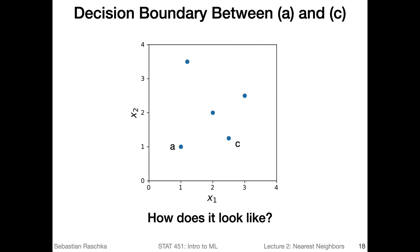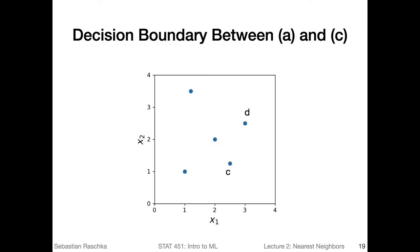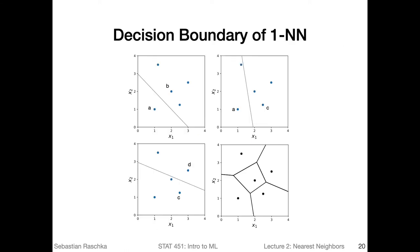We are going to repeat this exercise, now focusing on A and C. The decision boundary for A and C would be a line perpendicular to A and C such that every point on the line is equidistant from A and C. Similarly, we construct the decision boundary for C and D, and so forth. If we assemble all these decision boundaries for all pairs of points in the dataset, we get the decision boundary of a one nearest neighbor classifier.